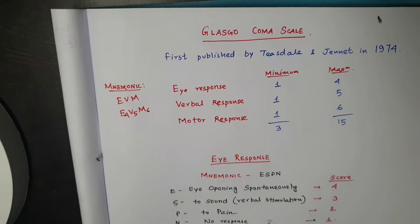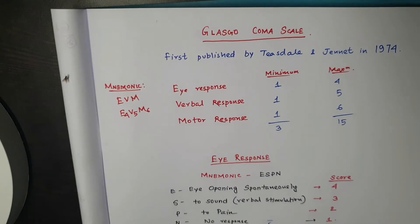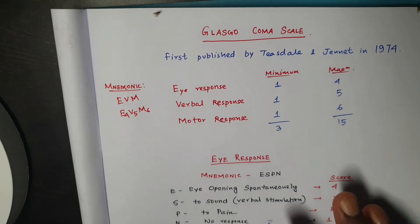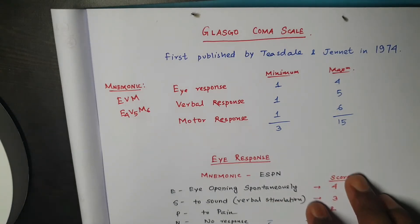Hello guys, welcome back to my channel. Today I am going to discuss the Glasgow Coma Scale. It is a scoring system used to assess the neurological outcome of the patient.